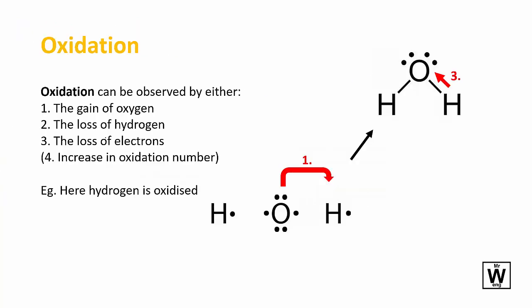Oxidation can be observed using one of these four things, either the gain of oxygen. When a substance gains oxygen, because oxygen is very electronegative, it draws the electrons to itself, and so this gains a positive and this gains a negative charge.